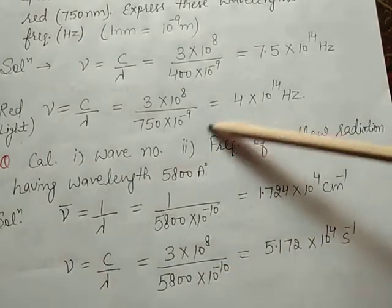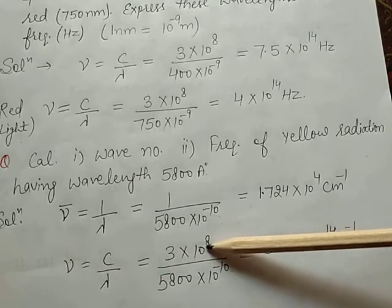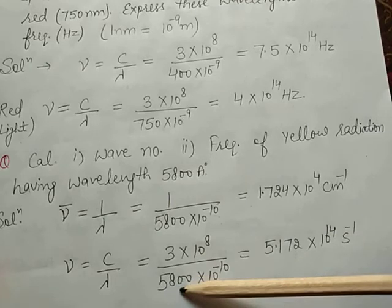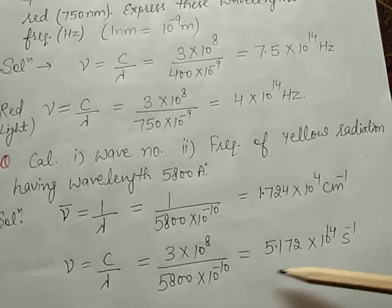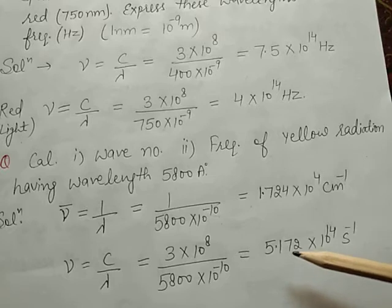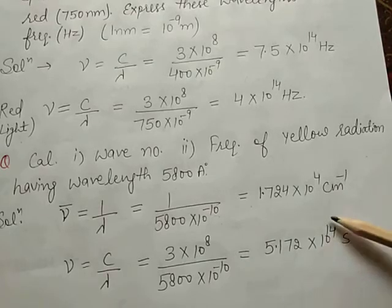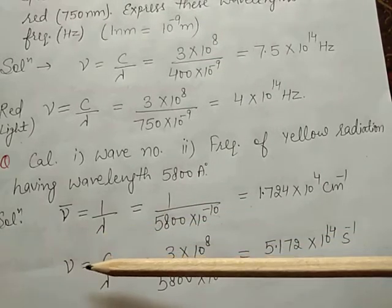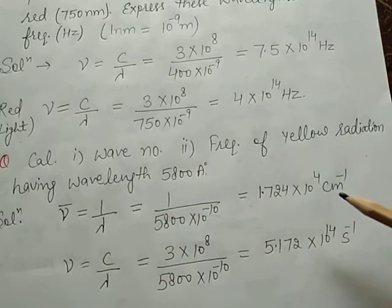Now calculate the frequency. Frequency is equal to C by lambda. C is 3 multiplied by 10 to the power 8, divided by lambda which is 5800 multiplied by 10 to the power minus 10. That is equal to 5.17 multiplied by 10 to the power 14 per second. The frequency unit is per second and the wave number unit is centimeter inverse.